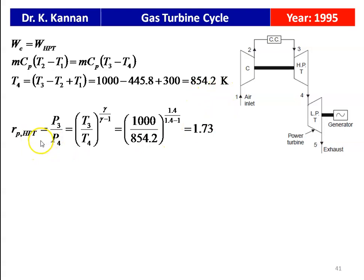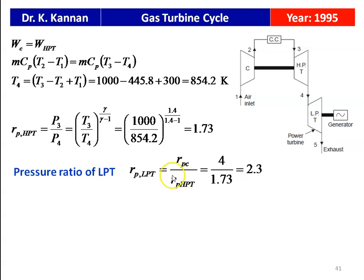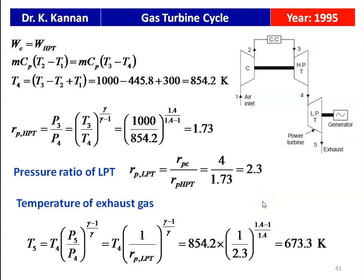The pressure ratio of the high pressure turbine P3/P4 = (T3/T4)^(γ/(γ-1)) = (1000/854.2)^(1.4/0.4) = 1.73. The pressure ratio of the low pressure turbine = compressor pressure ratio / high pressure turbine pressure ratio = 4 / 1.73 = 2.3. The exhaust gas temperature from the low pressure turbine T5 = T4 × (1/rp_LPT)^((γ-1)/γ) = 854.2 × (1/2.3)^(0.4/1.4) = 673.3 K.